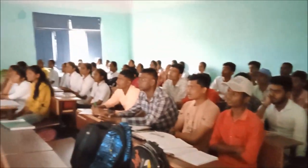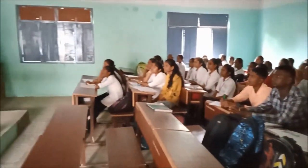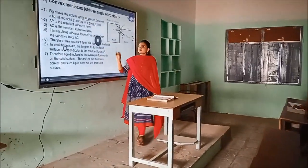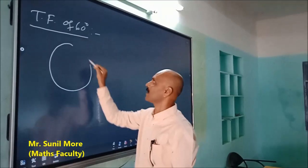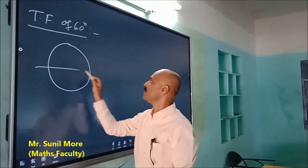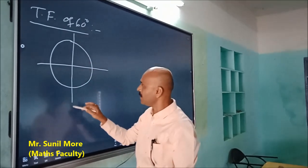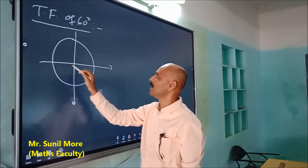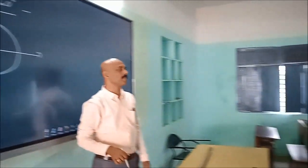The figure shows the obtuse angle of contact between solid and liquid. Which solid molecule and which liquid molecule? Now this is the x-axis and this is the y-axis. What type of circle is this?